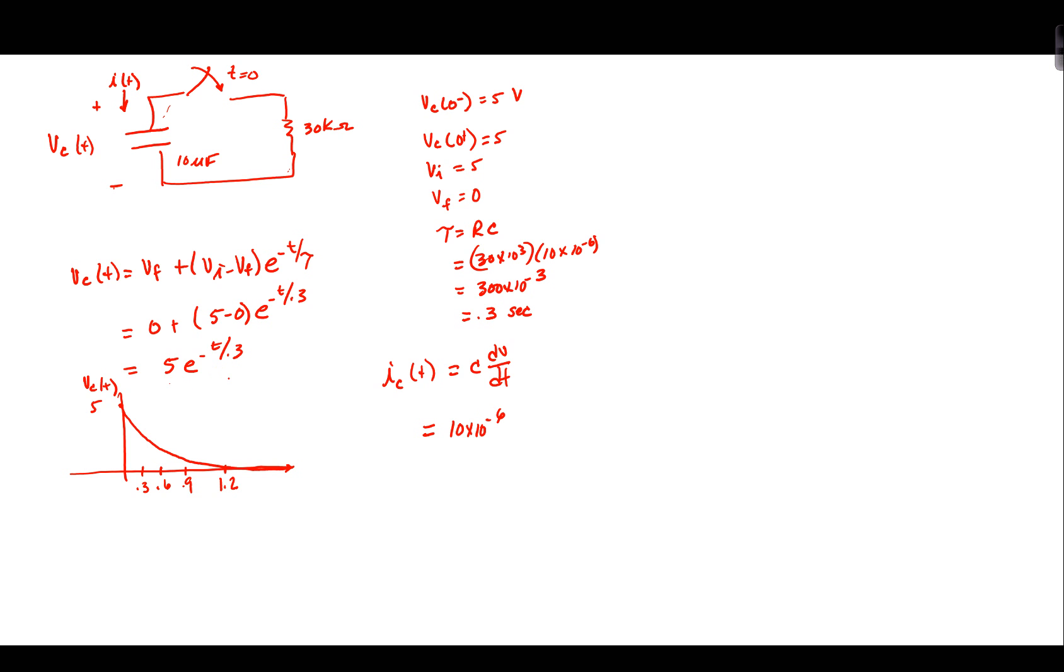C is equal to 10 times 10 to the minus sixth. Here is V of t, so the derivative of that is going to be the 5 times the derivative of the exponential function. Well, when you differentiate the exponential function, we kick out a negative 1 over 0.3 e to the minus t over 0.3.